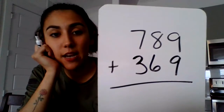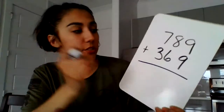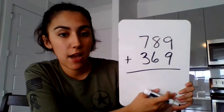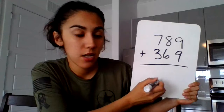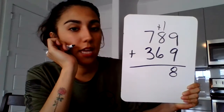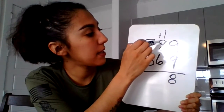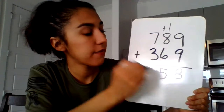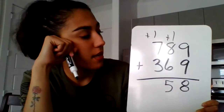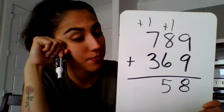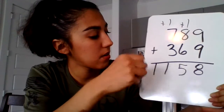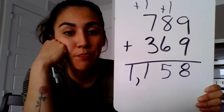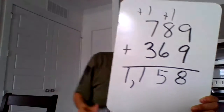Seven hundred eighty-nine plus three hundred sixty-nine. Start in the ones place: 9 plus 9 is 18, drop the 8, carry the 1. One plus 8 is 9, plus 6 is 15, drop the 5, carry the 1. Seven plus 1 is 8, plus 3 is 11. My comma goes right here. Final answer is one thousand one hundred fifty-eight.